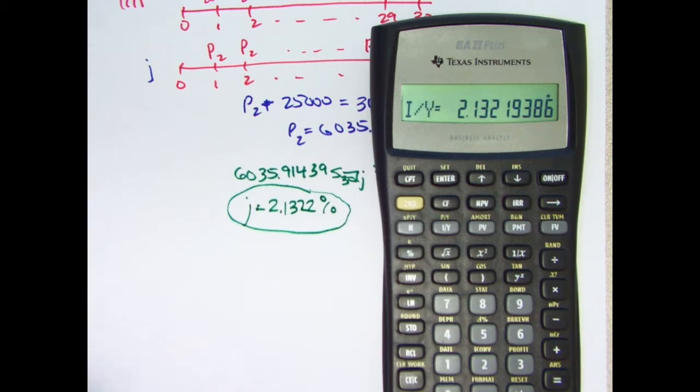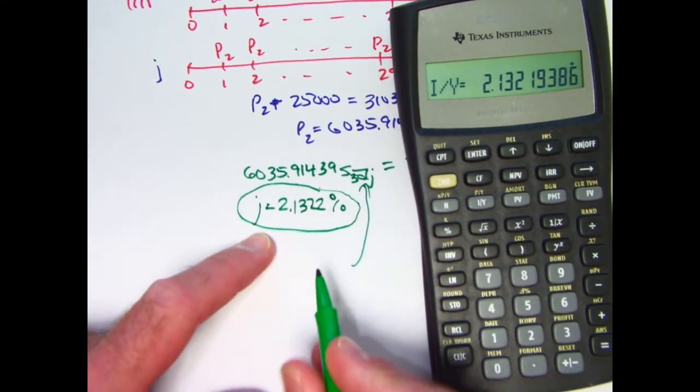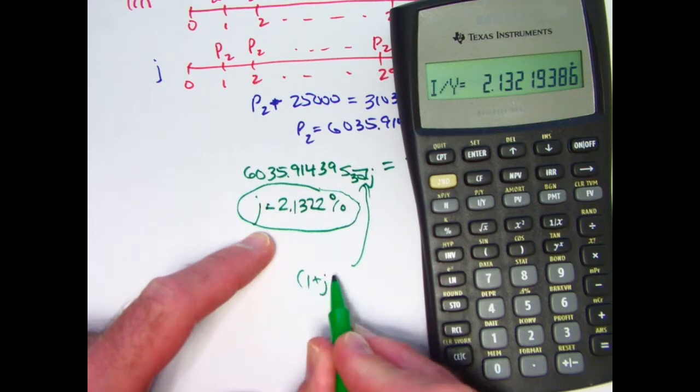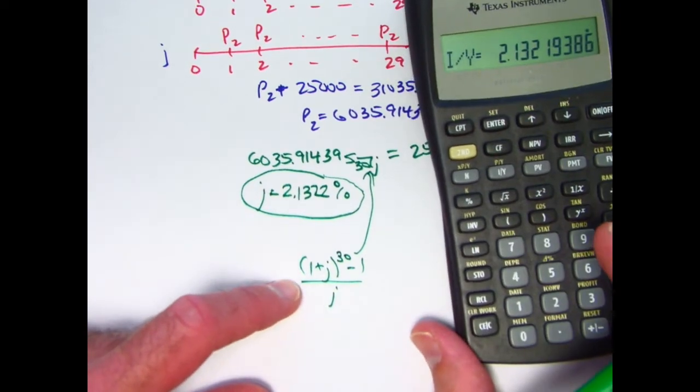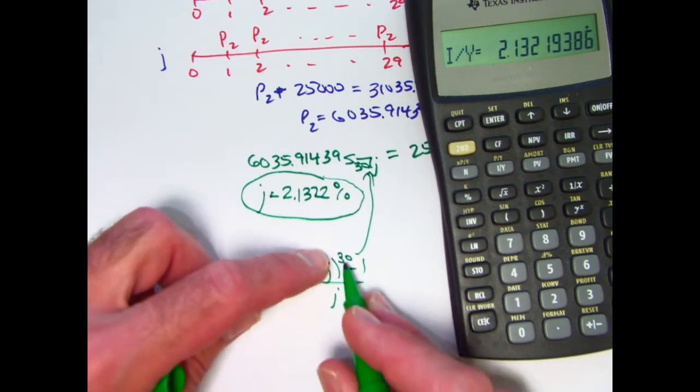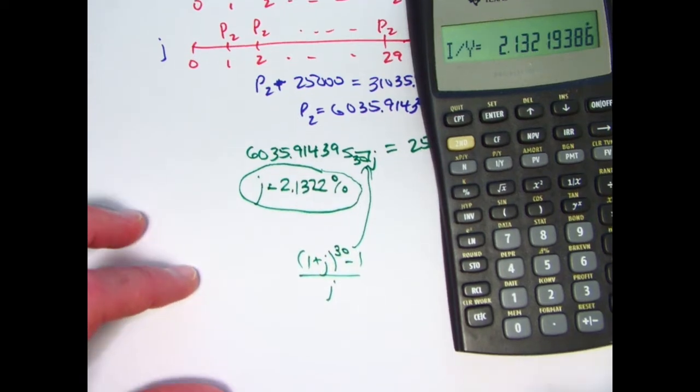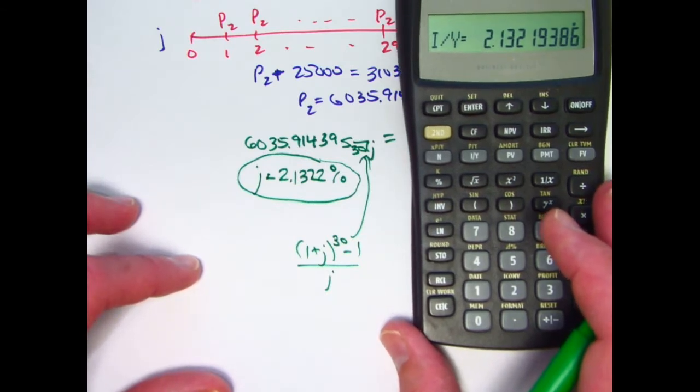If you're unsure if this is right or if you wanted to double check in some way, you could always now use the formula for this. This would be 1 plus J to the 30th minus 1 divided by J. You can see why it would be difficult to solve for J here analytically. Really impossible because you've got a J there and a J there with a 30th power there. It's not going to be possible to solve for J analytically. But let's just check that this works.